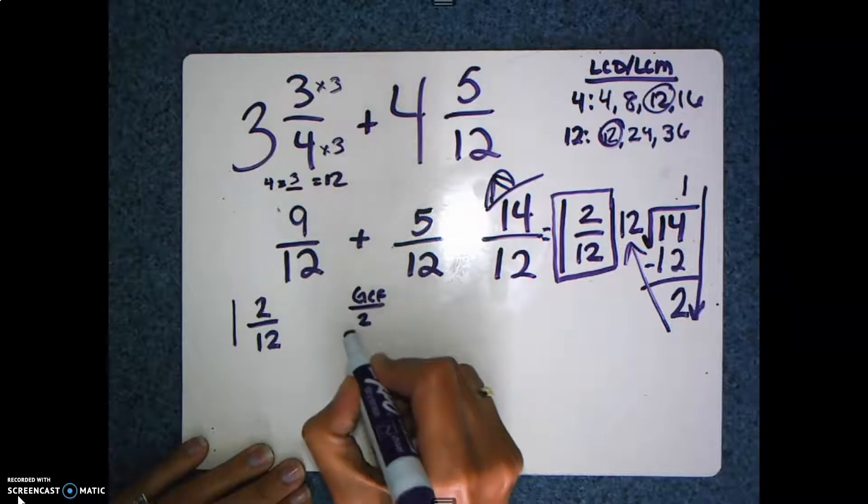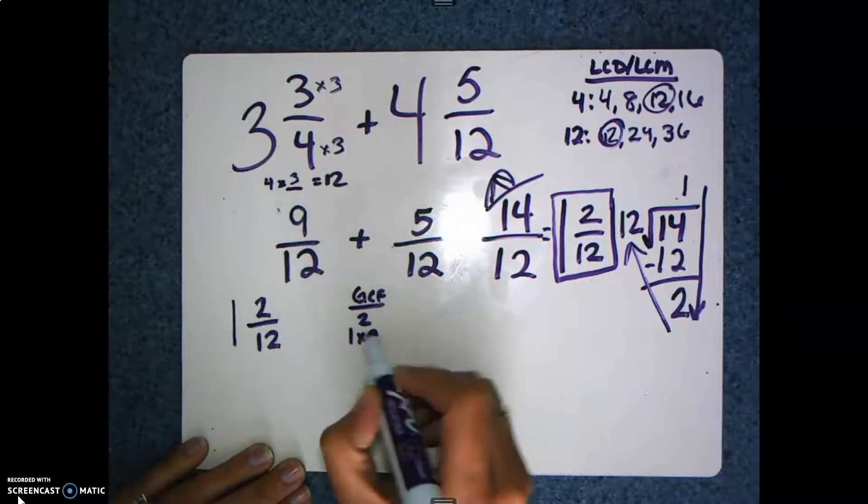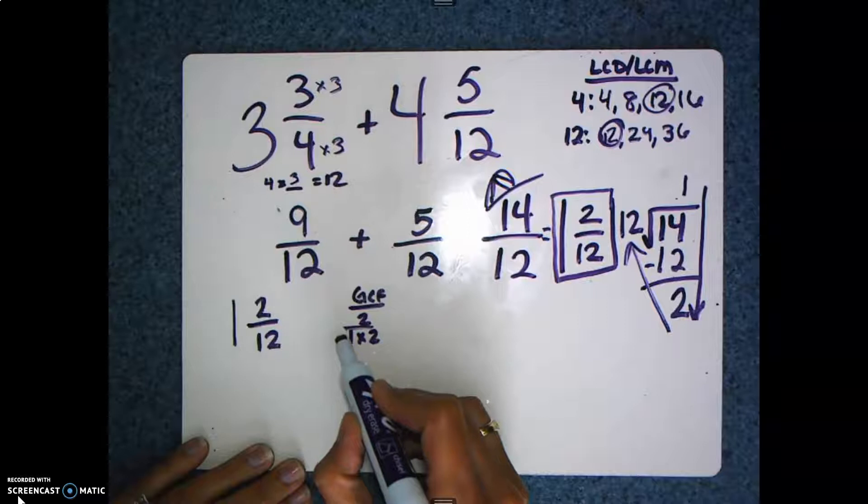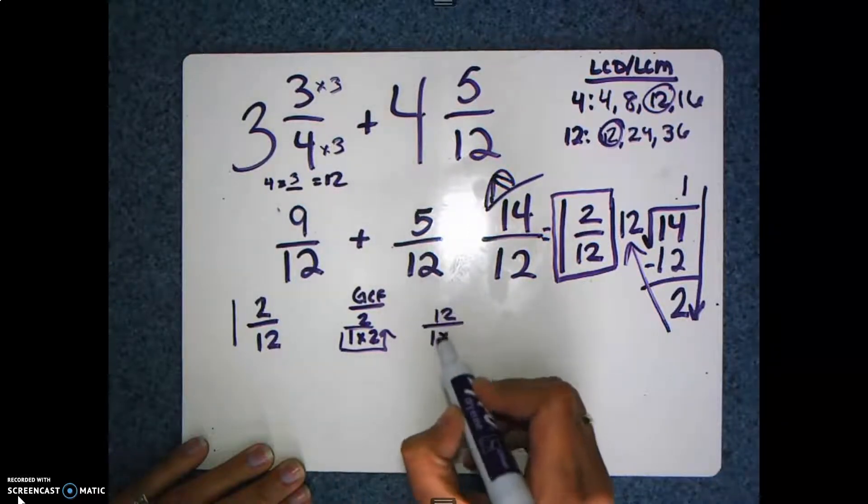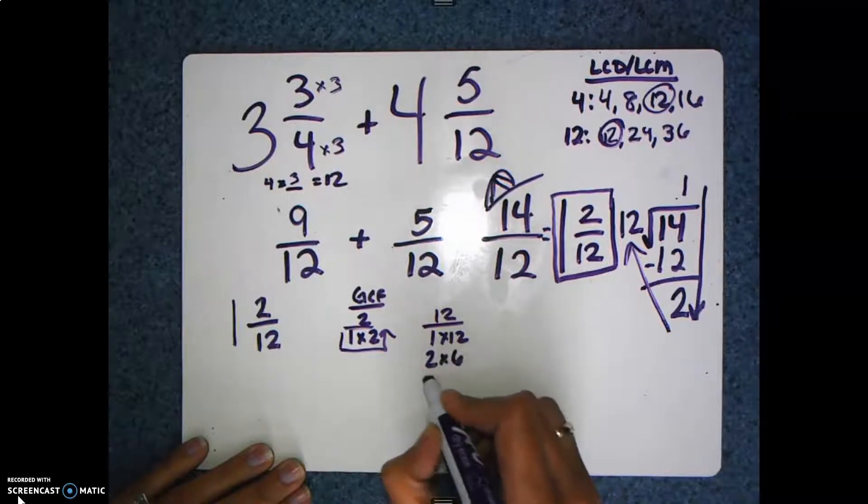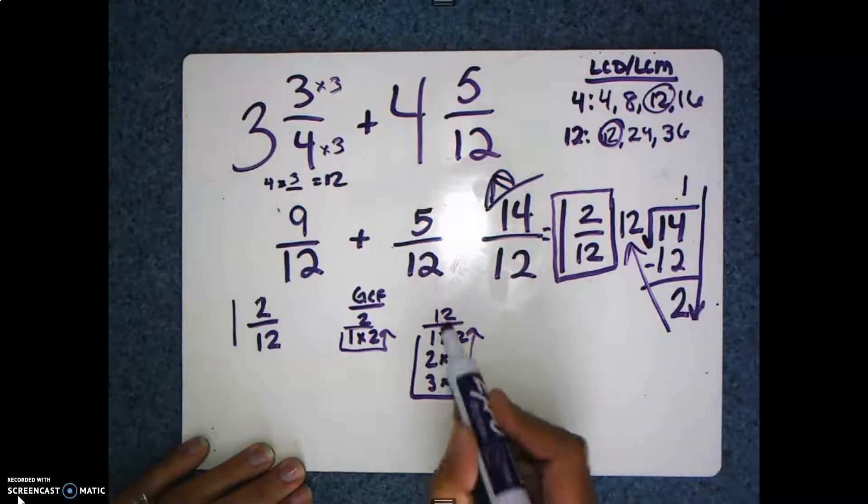I have to find out what the greatest common factor is for 2 and 12. And I know that the factors for 2 are 1 times 2, and the factors for 12 are 1 times 12, 2 times 6, and 3 times 4.